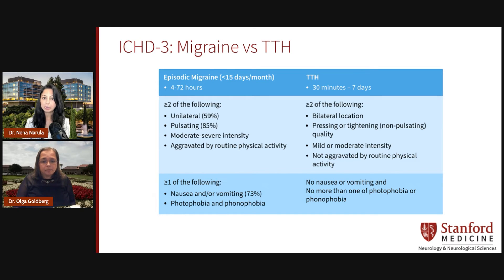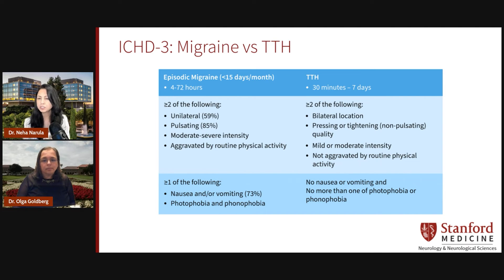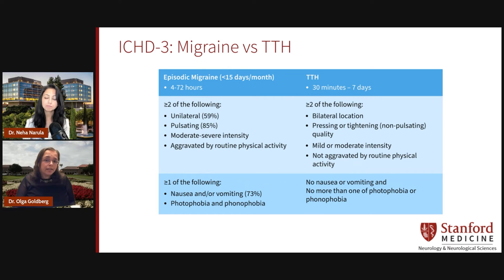So technically, someone who has a bilateral headache of moderate intensity that worsens when they go up the stairs and is also associated with some nausea will technically meet the diagnostic criteria for migraine? Precisely. And on the other hand, tension-type headache is typically mild, does not worsen with routine activity, and will not have nausea or light or sound sensitivity.